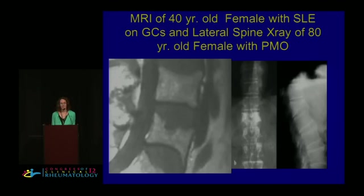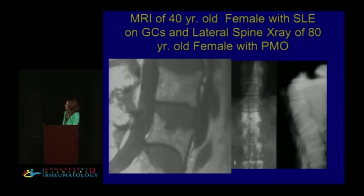Glucocorticoid-induced osteoporosis has some features that are similar to postmenopausal osteoporosis, but many features that are truly different. The glucocorticoid fracture itself is often different — if you look at this anterior wedge fracture shown in this lateral spine X-ray, this is what you often see in the glucocorticoid-treated fracture.